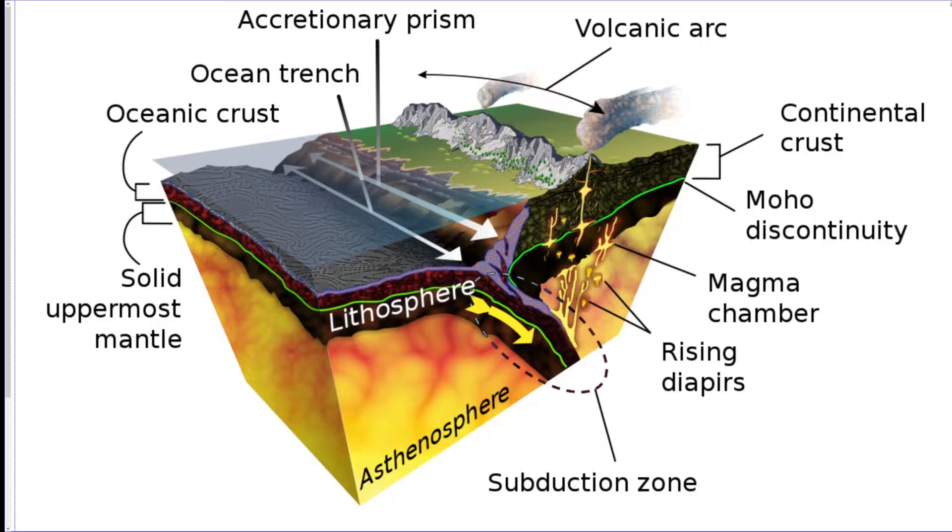Now, the idea here is that since the oceanic crust here is more dense, it's going to go underneath the continental crust when they hit each other. So this continent over here is hitting into the oceanic floor, and the oceanic floor here has no choice but to go underneath because it's more dense. And then eventually it melts and comes up and makes some volcanoes.